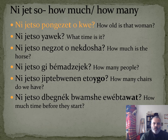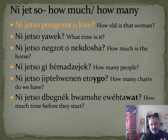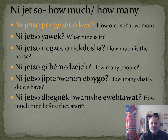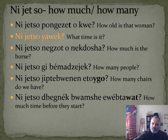Ni jetsu means 'how much' or 'how many.' Ni jetsu pon gazet okwe means 'how old is that woman?' Pon gazet literally means 'how many snows old somebody is,' because long ago years were judged by how many snows you've lived through.